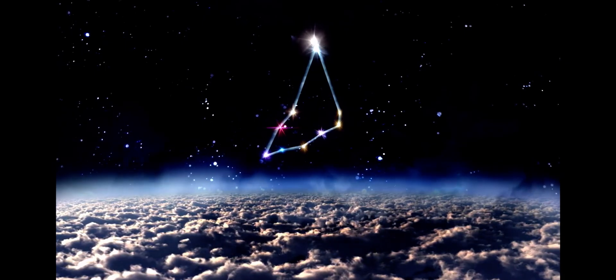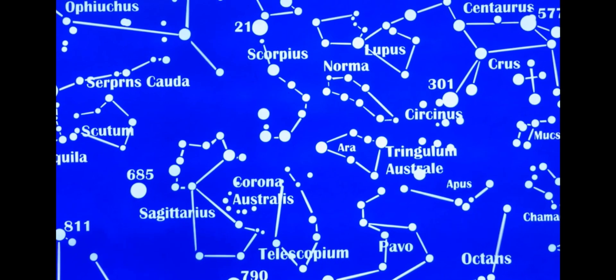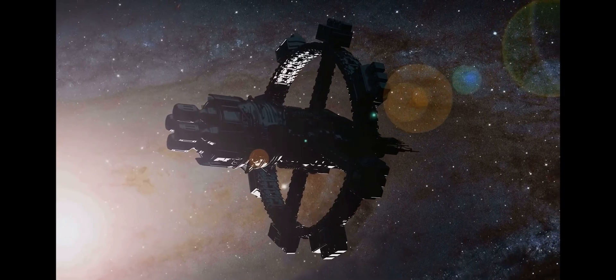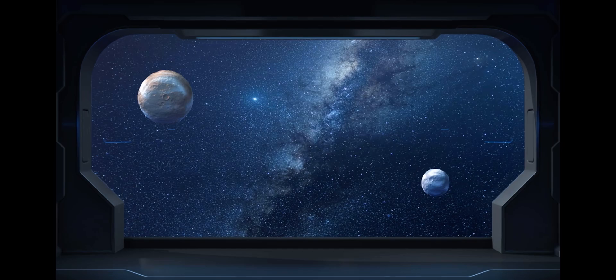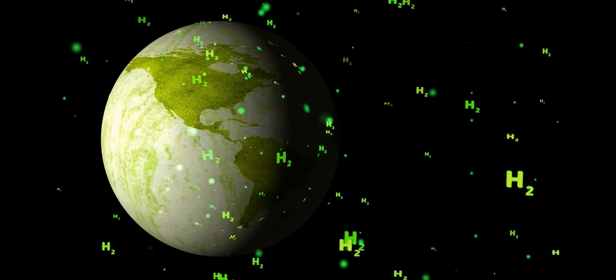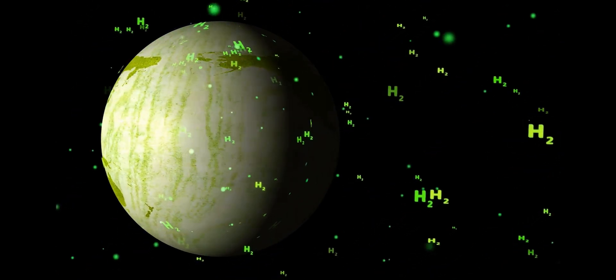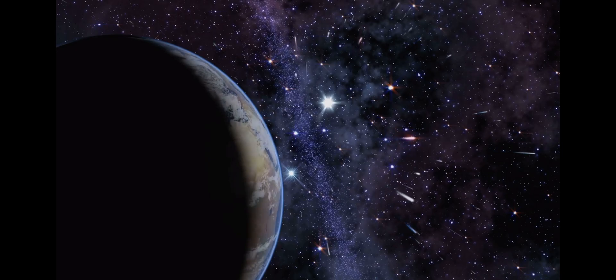Kepler-452b is located about 1,400 light-years away from us in the constellation Cygnus. That's a mind-boggling distance to travel using our current technology, but in astronomical terms, it's relatively close. This exoplanet is significantly larger than Earth, with a diameter about 60% greater, meaning its surface area is more than twice that of our planet.